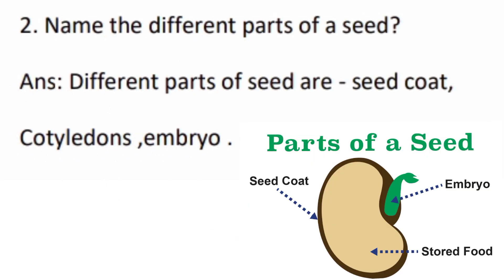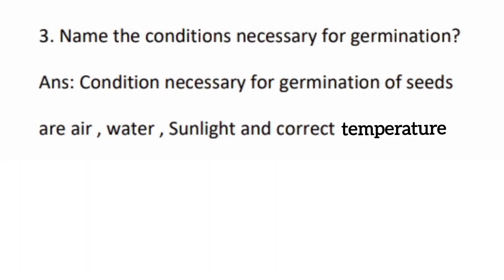Second question: name the different parts of a seed, draw a diagram and label the parts. The different parts of a seed are seed coat, cotyledons, and embryo. There is also a diagram of the parts of a seed that you can see and draw on a copy. Third: name the conditions necessary for germination — air, water, sunlight, and correct temperature.